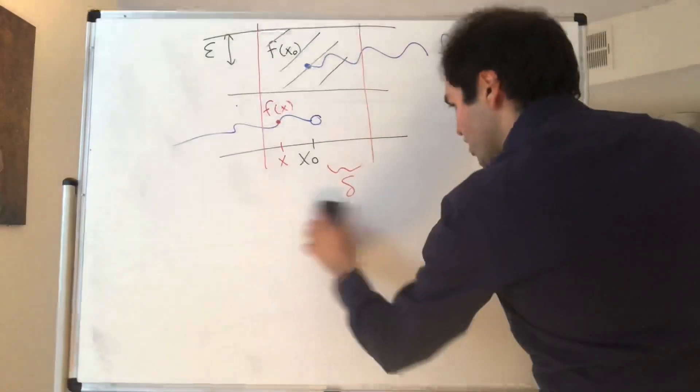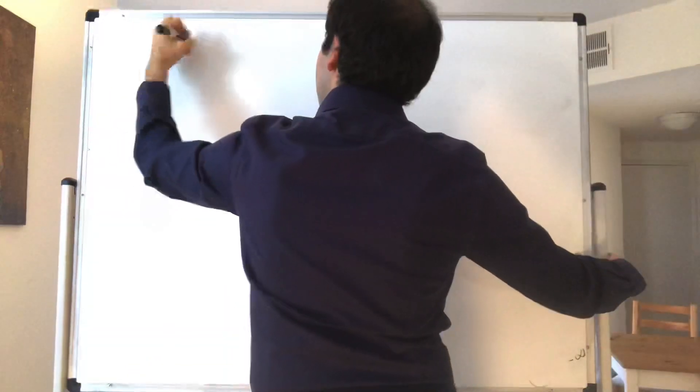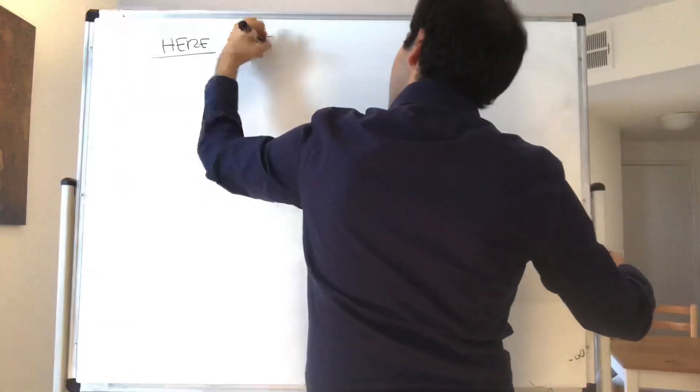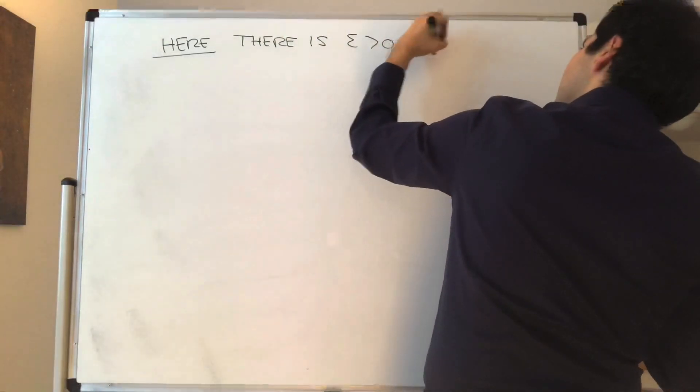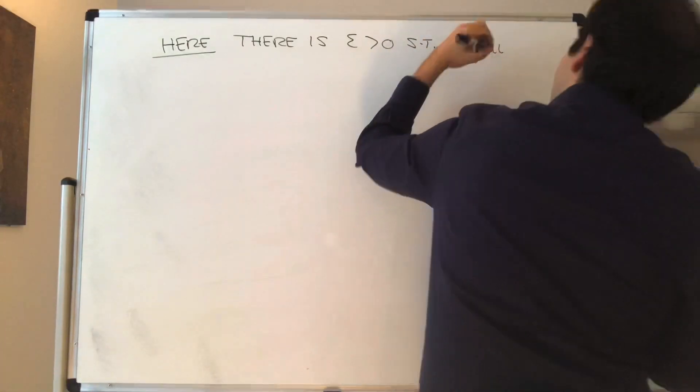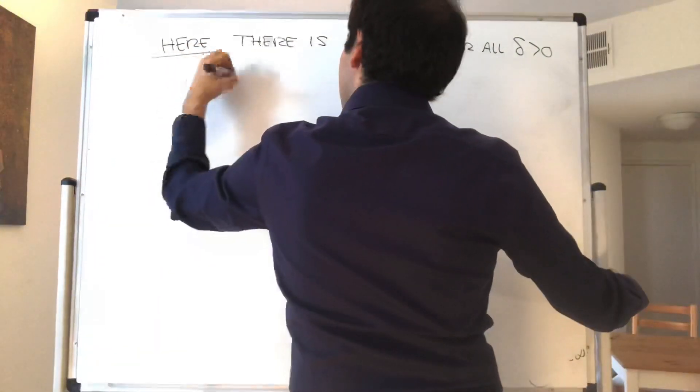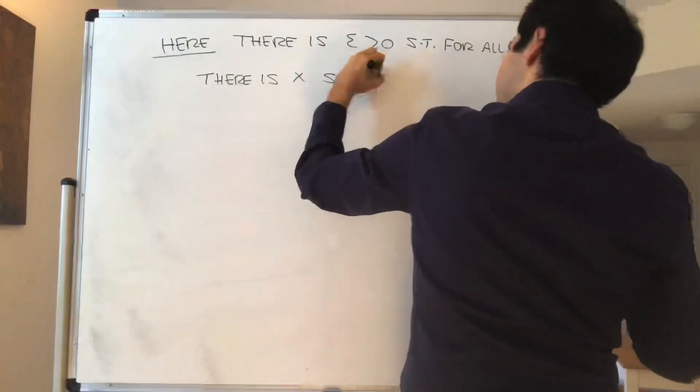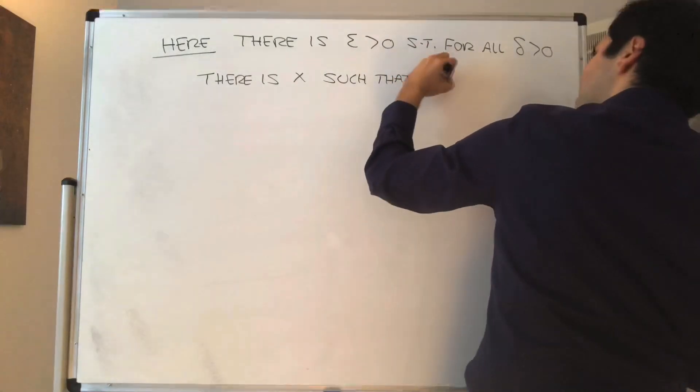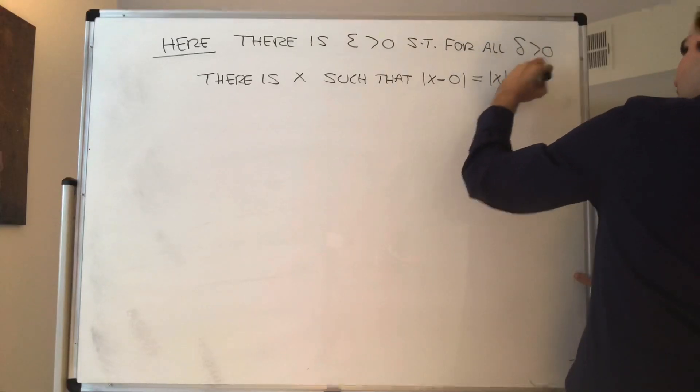Now let's apply this to our function f of x. Here what we want is as follows: there is some error epsilon positive, such that for all delta there is x such that x minus x naught, so x minus 0, which is absolute value of x, is less than delta,